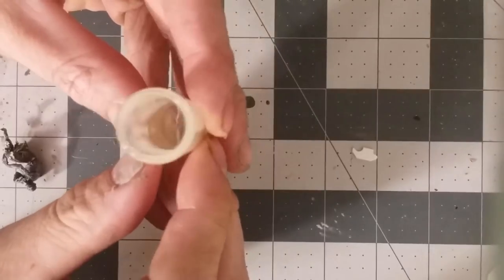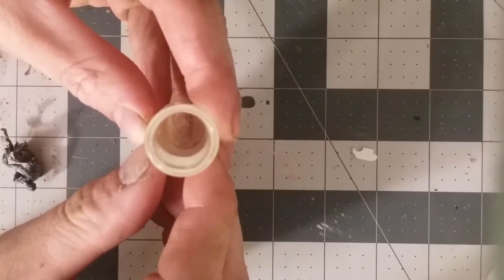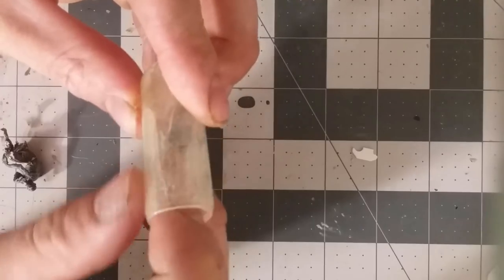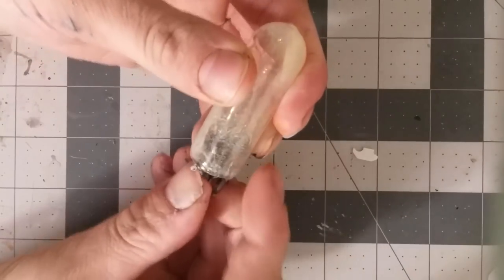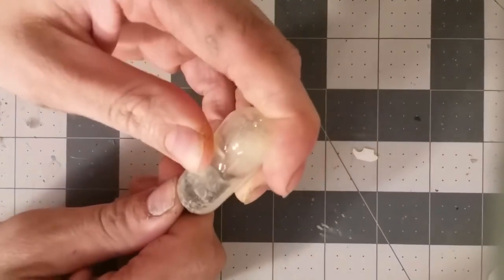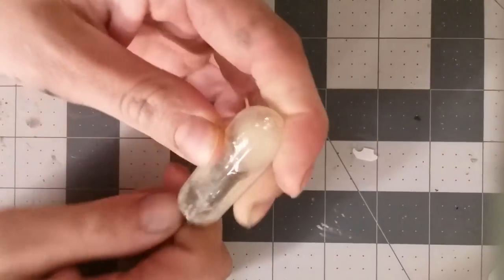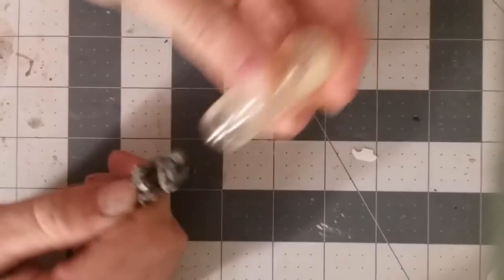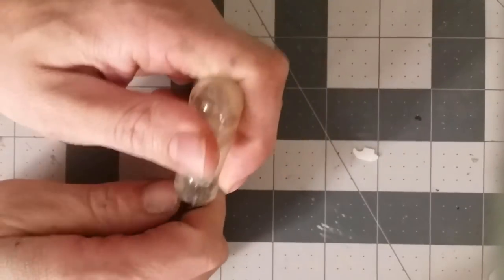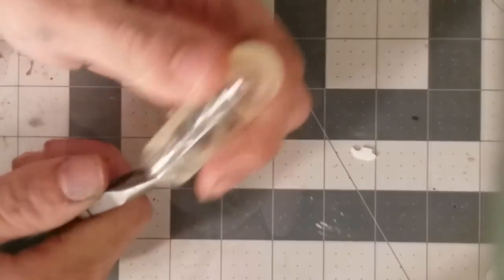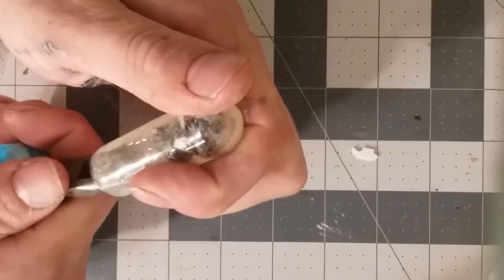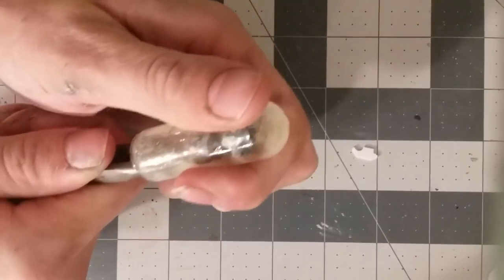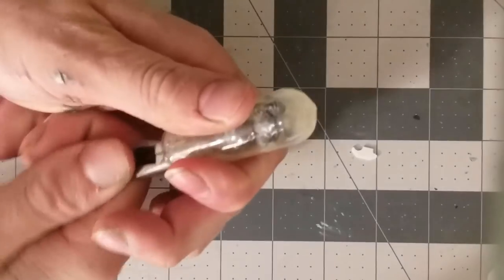Now that the epoxy has cured into a thin layer, we can add our miniature. It might be a bit difficult to fit it in and I found a pair of needle nose pliers really helped. Once you get the miniature to where you like it, we're done.